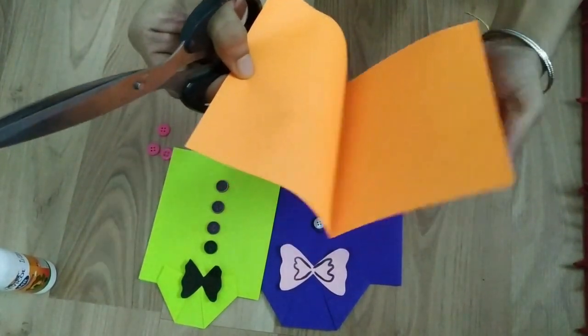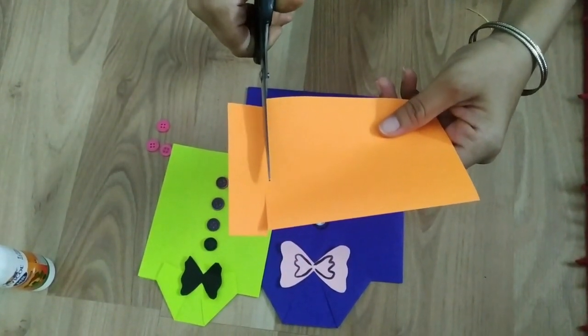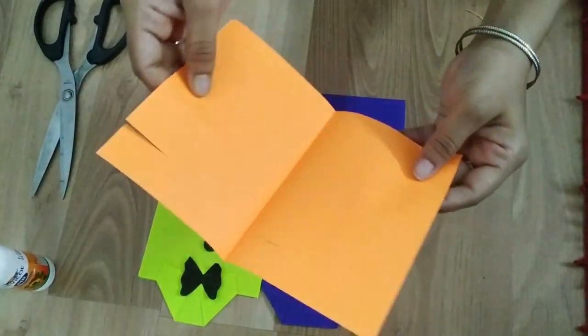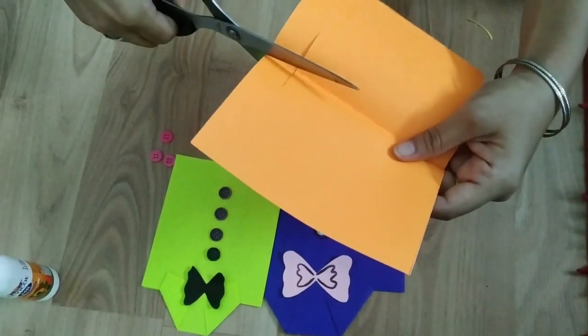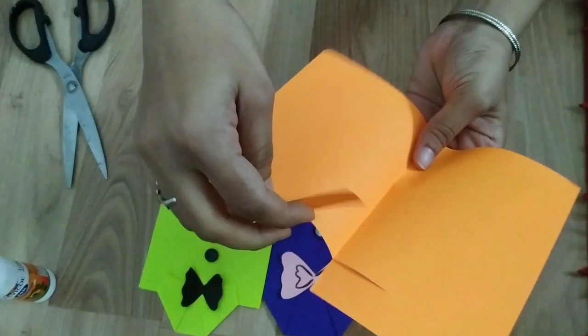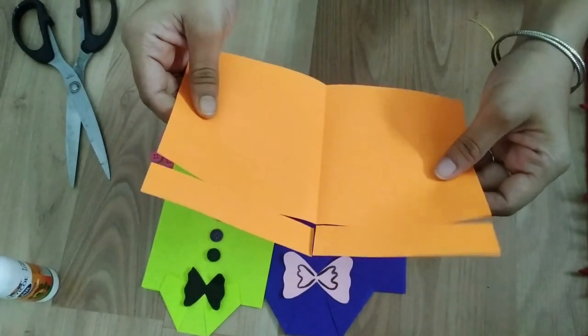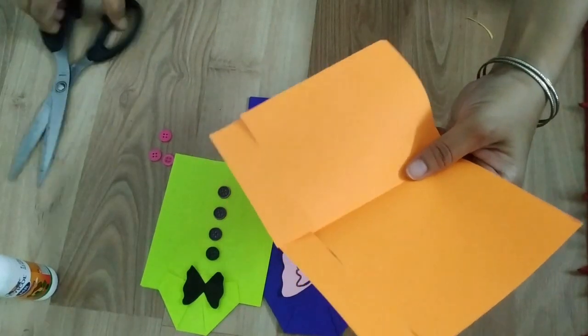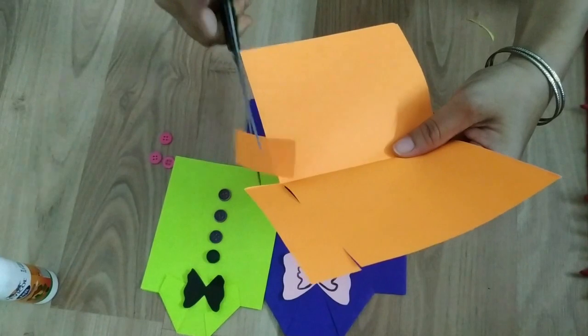See? So one side. This is our card. So we need to cut this. Here we start.